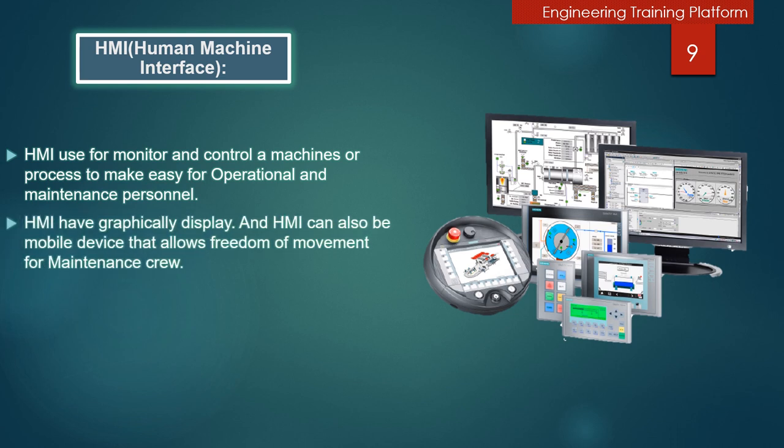Human-Machine Interface. This topic we already discussed in my previous lecture but here is some detail. HMI is used to monitor and control a machine or process to make it easy for operational and maintenance personnel. HMI has graphical display and we have features in the HMI as a mobile device that allows freedom of movement for maintenance crew.